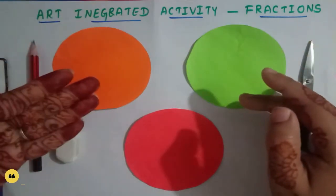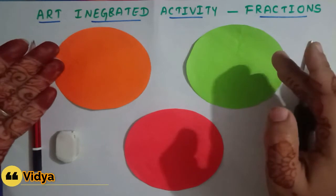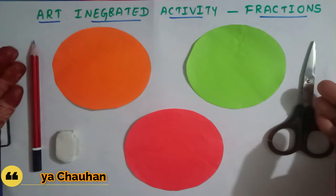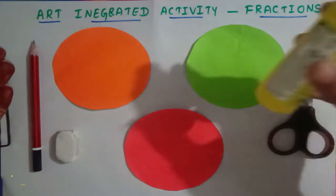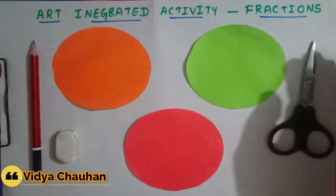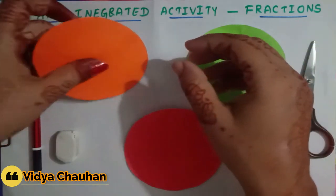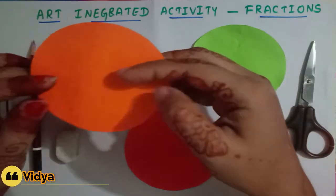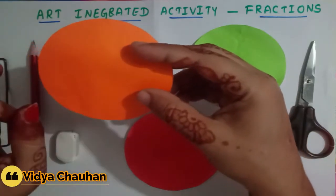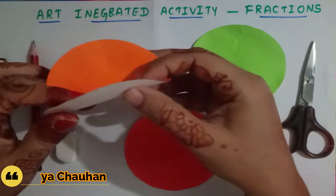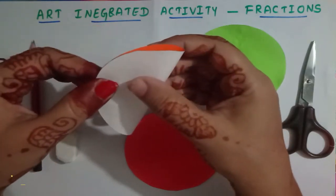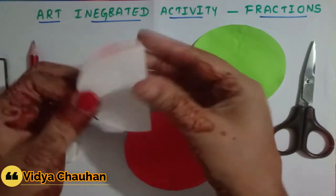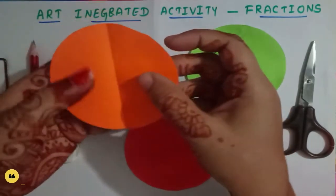I have taken three different colored circular whole fractions. Along with that, we are going to use a pencil, eraser, scissors, and some glue to paste the pictures. Starting with the first one — I am going to divide this whole into two halves by folding it into two equal parts.